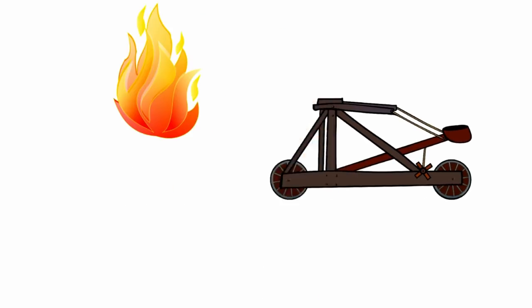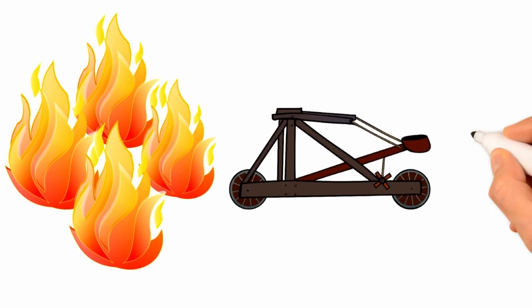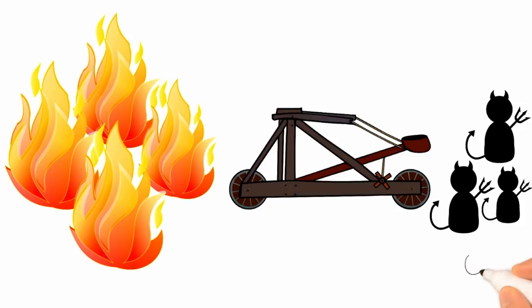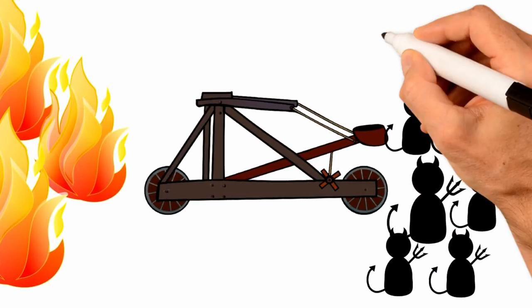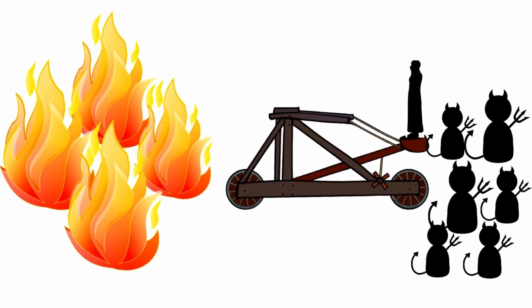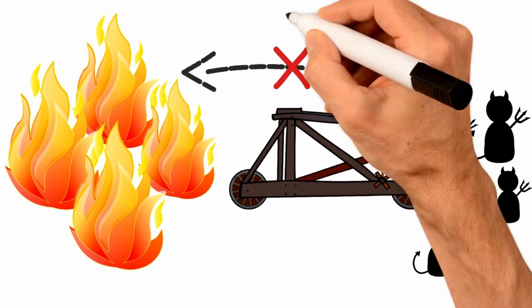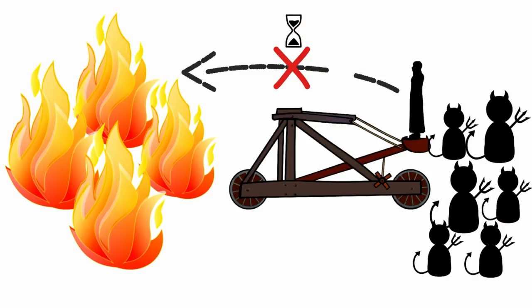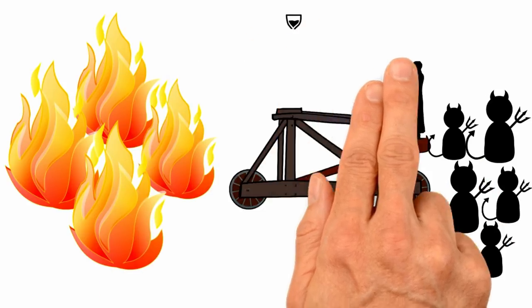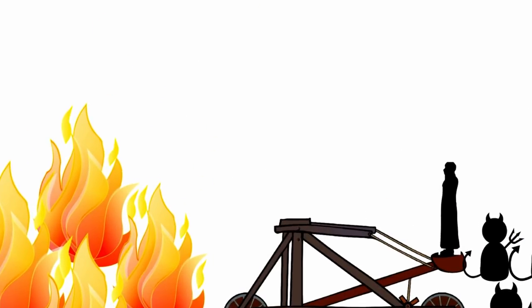Ibrahim was put on a catapult ready to get flung into the fire by the wuzaraat of Nimrud. They put him on the catapult and they're ready to fling him. Between him and the fire is just a few seconds distance. They cut the catapult and he goes in the air.